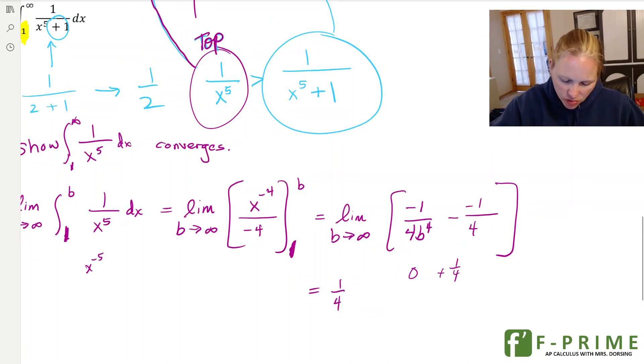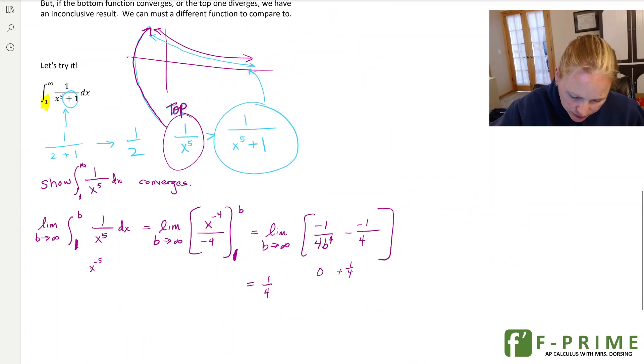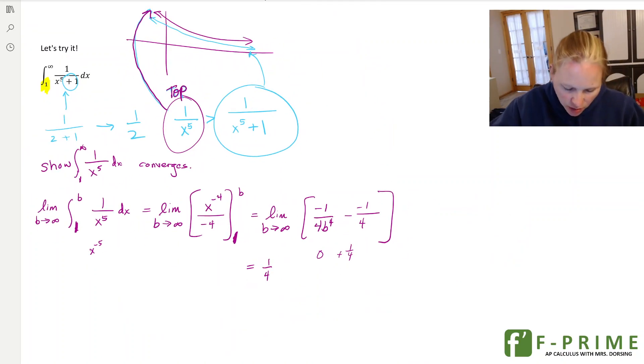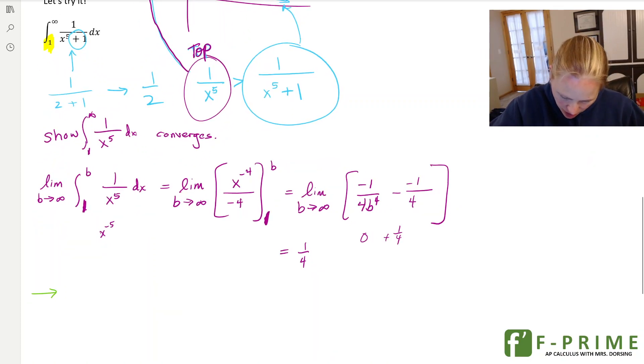Now here's what I have to do. Anytime I use this comparison test, I have to state a couple of things. So the first thing I'm going to do is I'm going to state my little sandwichy inequality. I'm going to say, okay, this function is between 0 on the interval 1 to infinity. So I have to set that up. That's thing number 1 I have to say. So I have to give my evidence. So step 1, show the inequality, show that you found a function that's bigger.